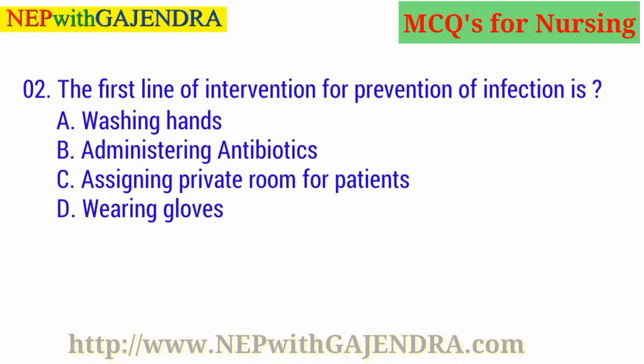The first line of intervention for prevention of infection is: A. Washing hands. B. Administering antibiotics. C. Assigning a private room for patients. D. Wearing gloves. The right answer is A: Washing hands.